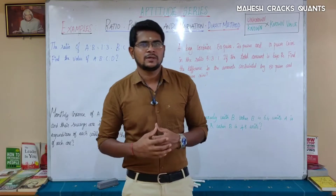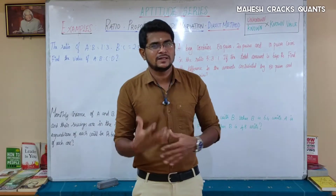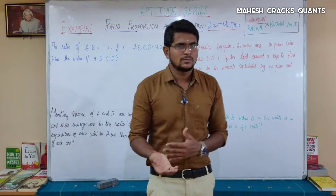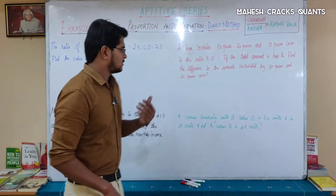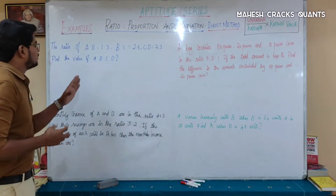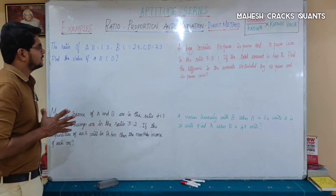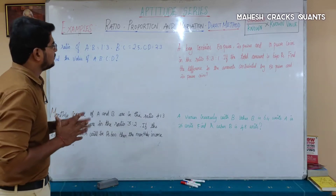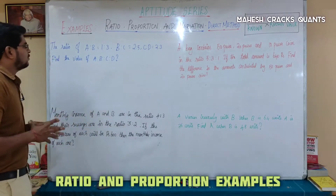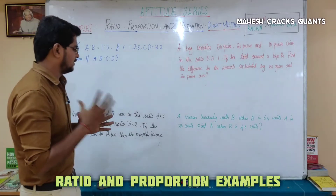This is Mayesh. We are going to continue with ratio and proportion. First sum: the ratio of a to b is equal to 1 is to 3, b to c is equal to 2 is to 5, and c to d is equal to 2 is to 3. Find the value of a to b to c to d.